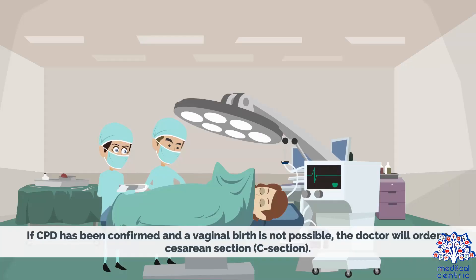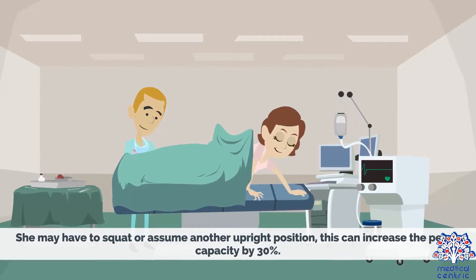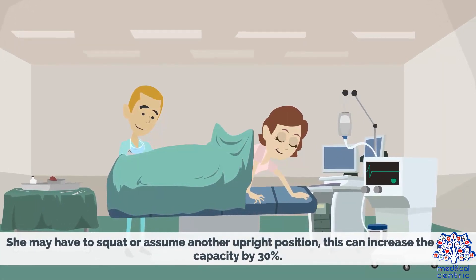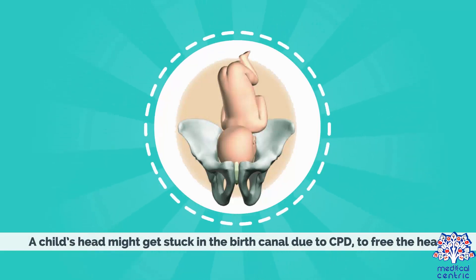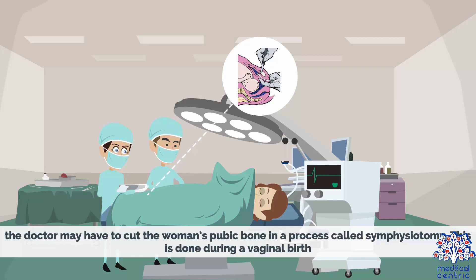If CPD has been confirmed and a vaginal birth is not possible, the doctor will order a cesarean section, or C-section. If vaginal delivery is possible and a C-section would be harmful to the child, the mother may be asked to change her position — such as squatting or assuming another upright position — which can increase pelvic capacity by 30%. If the child's head becomes stuck in the birth canal, the doctor may need to cut the woman's pubic bone in a process called symphysiotomy, performed during vaginal birth.